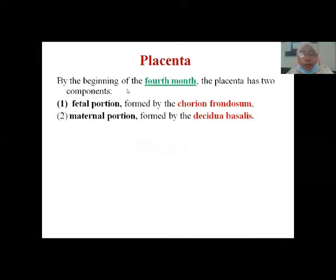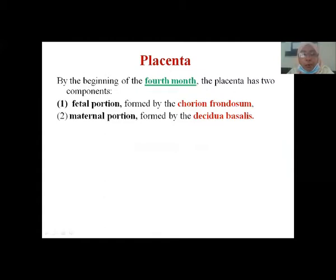Placenta is a plate-like or disc-shaped structure. It has two components. During the fourth month of development, the placenta shows two components: one is the fetal portion and another one is the maternal portion. The fetal portion comes from the Chorion frondosum and the maternal portion develops from the Decidua basalis.